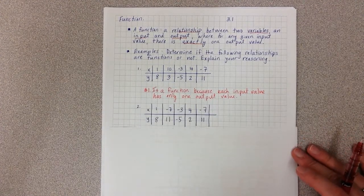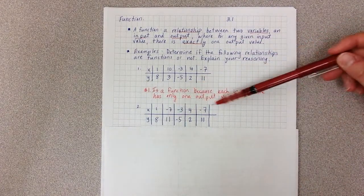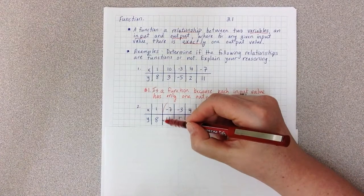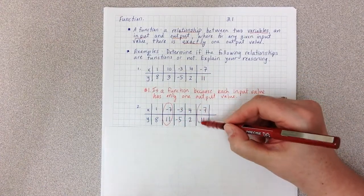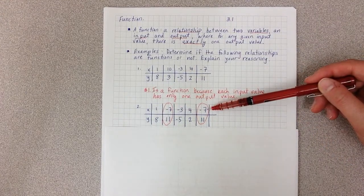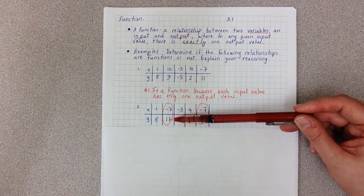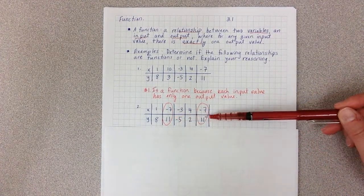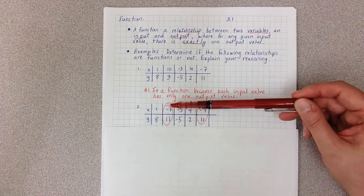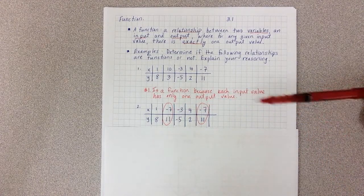Number 2, again, we're checking to see if any input values repeat. In this case, we do have ones that repeat: -7, 11, -7, 11. So we have two -7s as input values. Now we look at our output values. In this case, our output values are actually the same, they're both 11. Which means that even though my input values repeat, -7 and -7, this is still a function.